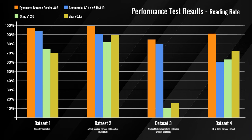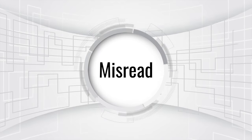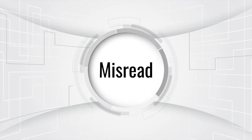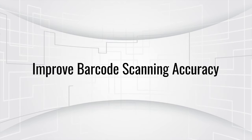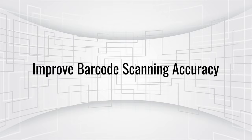Although Dynamsoft Barcode Reader has recognized the highest number of barcodes, misreads happen with the default settings. So how do you improve the barcode scanning accuracy?